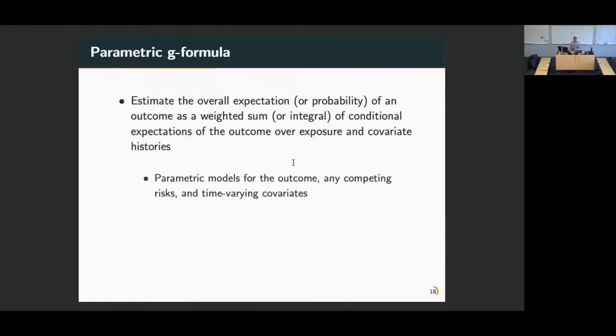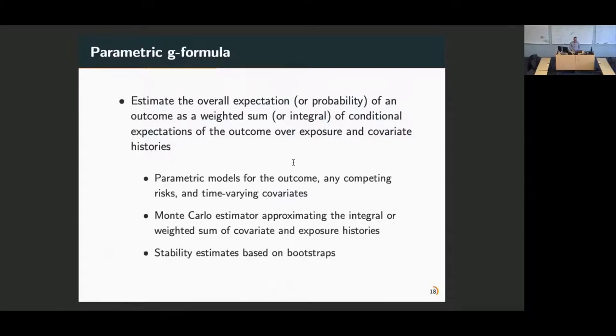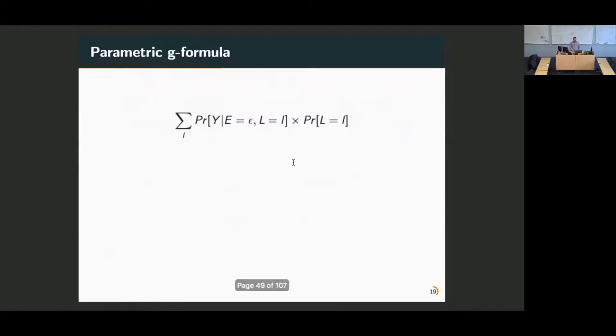We're going to estimate the overall expectation of an outcome as a weighted sum of conditional expectations of the outcome over exposure and covariate histories. The way we do this is we fit separate models for the outcome, any competing risks, and time-varying confounders, including time-varying exposure, and use a Monte Carlo estimator to approximate the integral or the weighted sum. Then we bootstrap the entire thing to get our 95% confidence intervals.